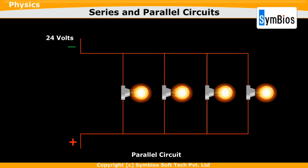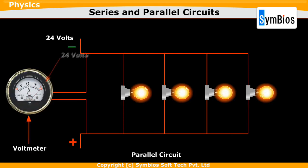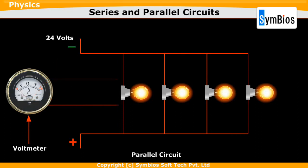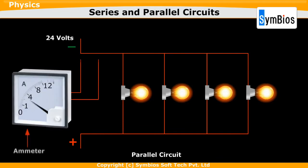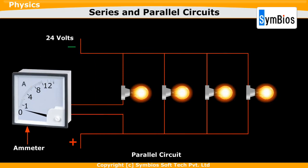Let us connect a voltmeter across this circuit. We can find that the reading is 24V. Now let us connect the voltmeter across each of the bulbs. We find that the voltage across each bulb is 24V. Now we will see what happens when we connect an ammeter to the circuit. We find that the reading is 4A. When we connect this ammeter across each of the bulbs, the ammeter reading is 1A. That is, the current at the battery is a sum of currents through each bulb.